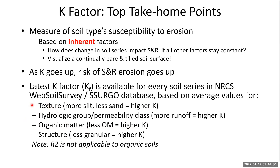Looking closer at texture — sand, silt, clay — the more silt you have in your soil type and the less sand, the higher the K, meaning higher risk of erosion. For hydrologic group or permeability class, the more your soil tends to run off, the higher your K would be — you have more transport potential if water isn't infiltrating. The less organic matter you have to promote aggregation and help soil resist detachment, the higher the K.